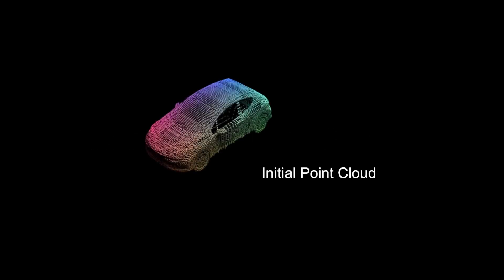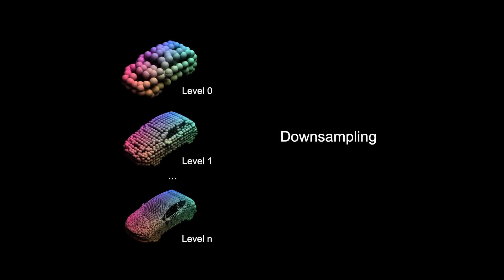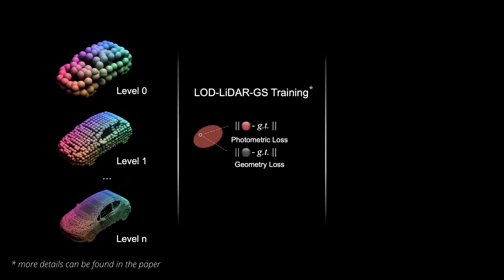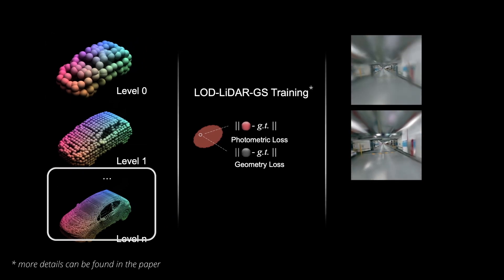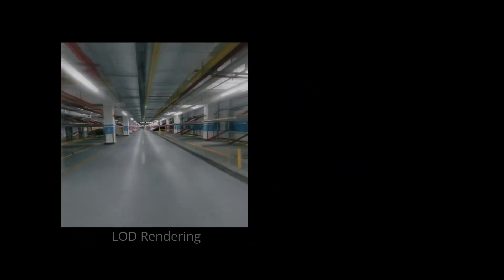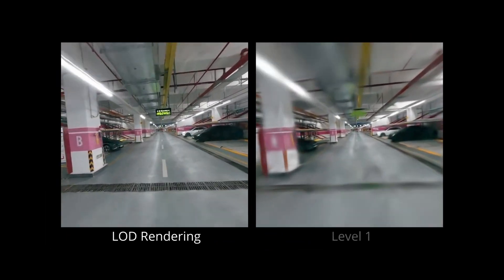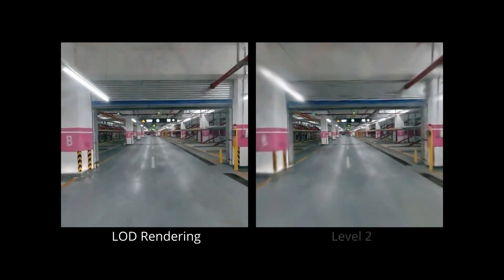First, we downsample the dense LiDAR point cloud into different resolution point clouds to initialize Gaussian models at different levels. We use the same regularization terms, including photometric loss and geometry loss, to train each level of Gaussians independently. Then, we select 3D Gaussians from different resolution levels based on depth ranges to predict the final LOD rendering results.